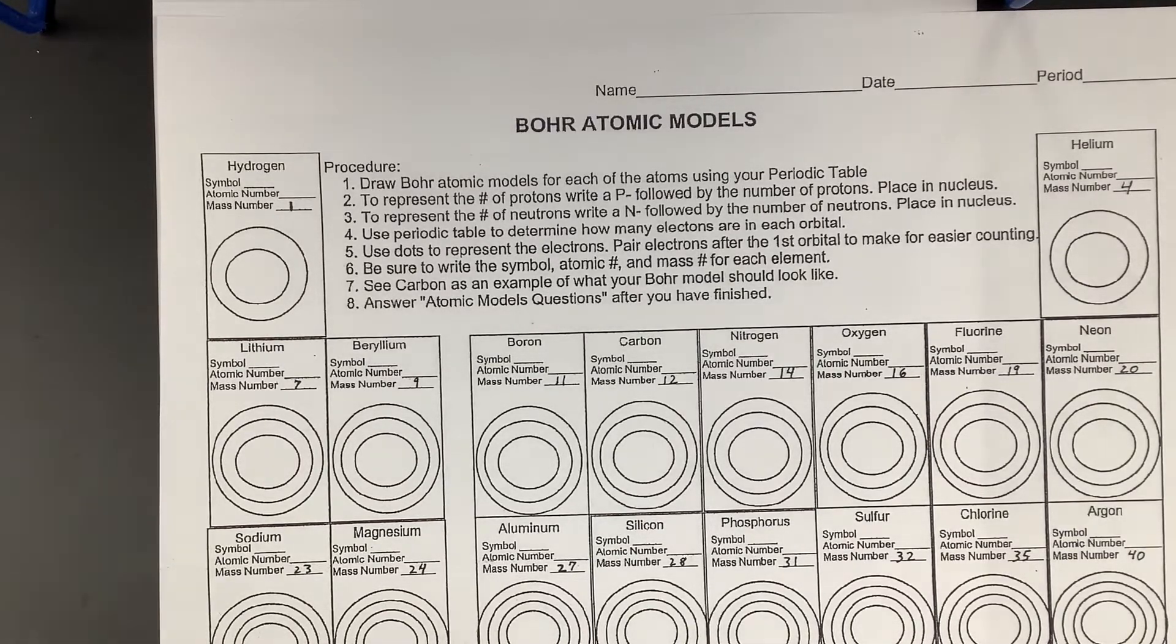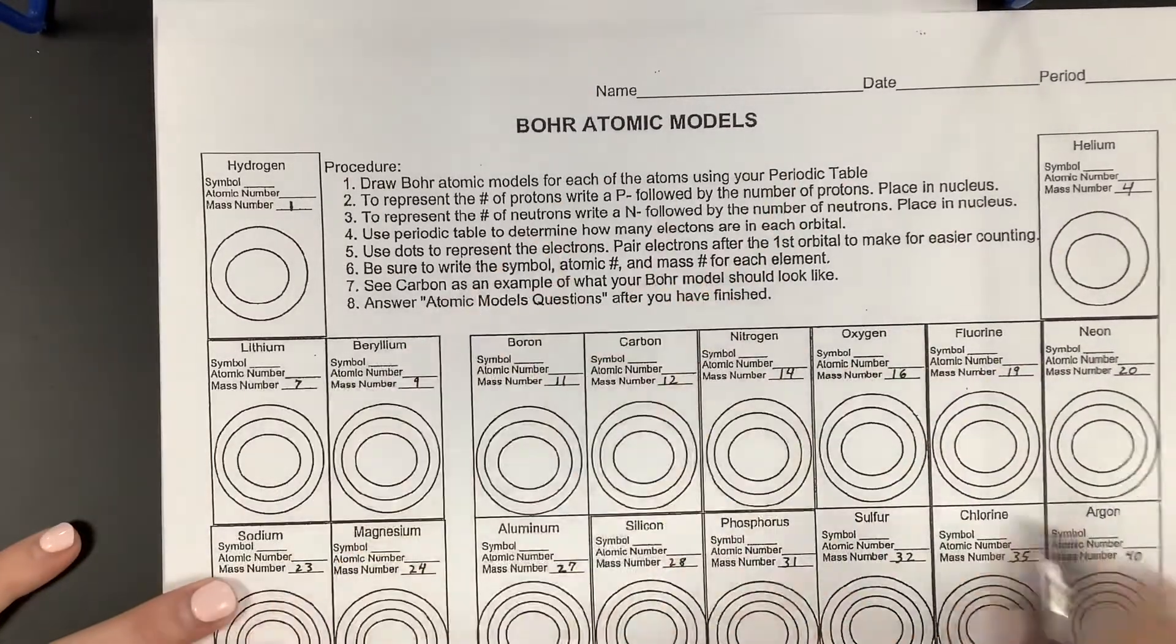When we draw those Bohr models, do you think the periodic table is arranged in a way that is some systematic way? Yeah. So when we draw these, we're going to notice patterns. Before we go to this though, we're going to do a couple together. So let's do, anybody have a preference? Lithium. Okay. So let's do lithium.